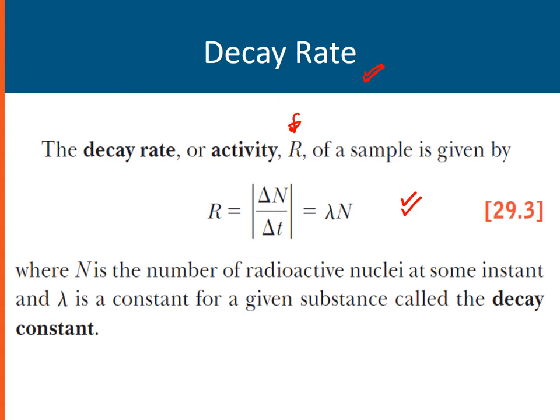N is the number of radioactive nuclei at some instant, and lambda is a constant for a given substance called the decay constant. The greater the value of the decay constant, the faster the nuclei decays, whereas when the decay constant is small, this means the radioactive nuclei decays slowly.